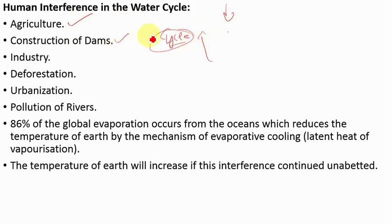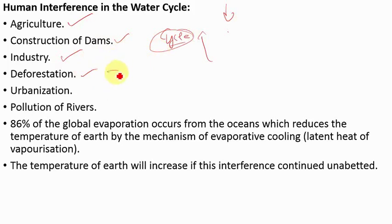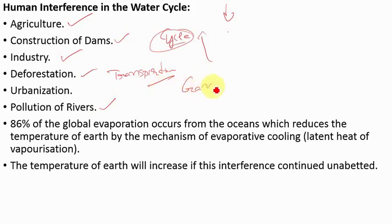We also construct dams which hinder the natural flow of rivers and affect their ecology. Through increasing industrialization, we are polluting water by discharging untreated chemical waste into it, affecting freshwater. Another way we interfere is through deforestation — because trees contribute water vapor to the atmosphere through transpiration, and deforestation stops this. Also, urbanization is polluting our water and rivers. A very lively example is the Ganga and how polluted it has become.